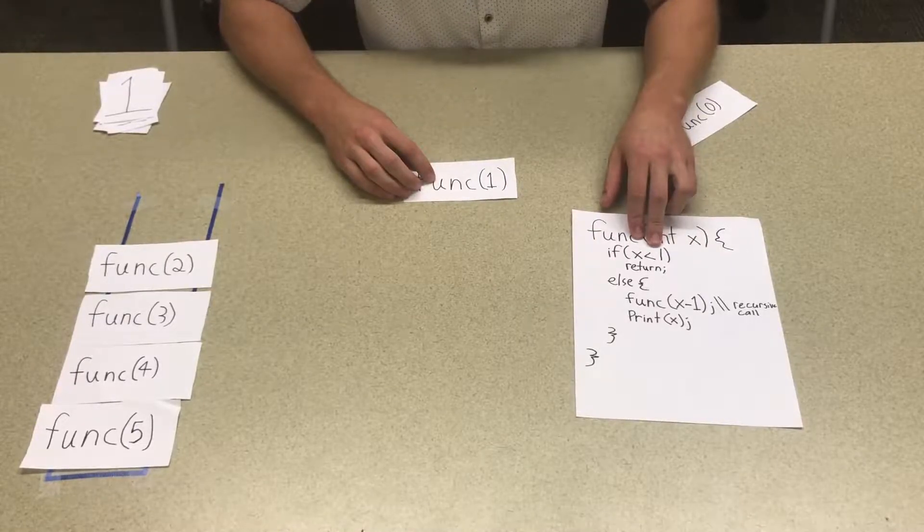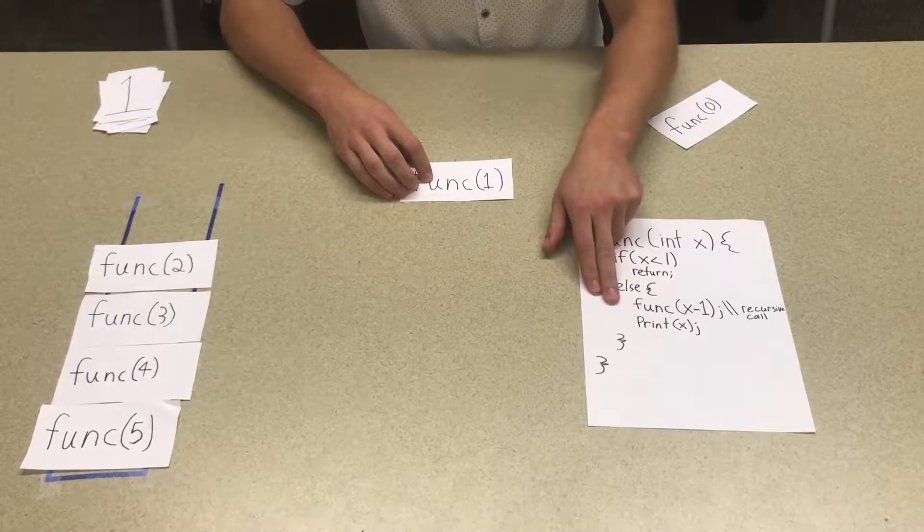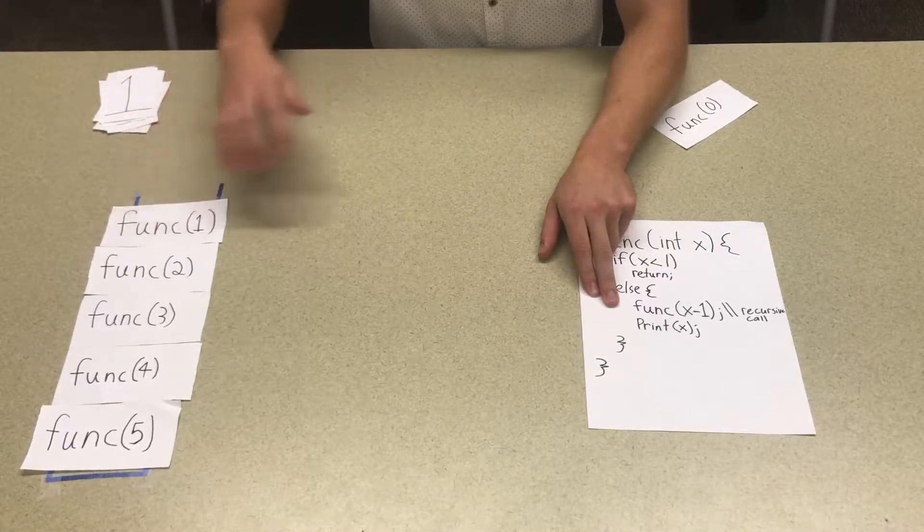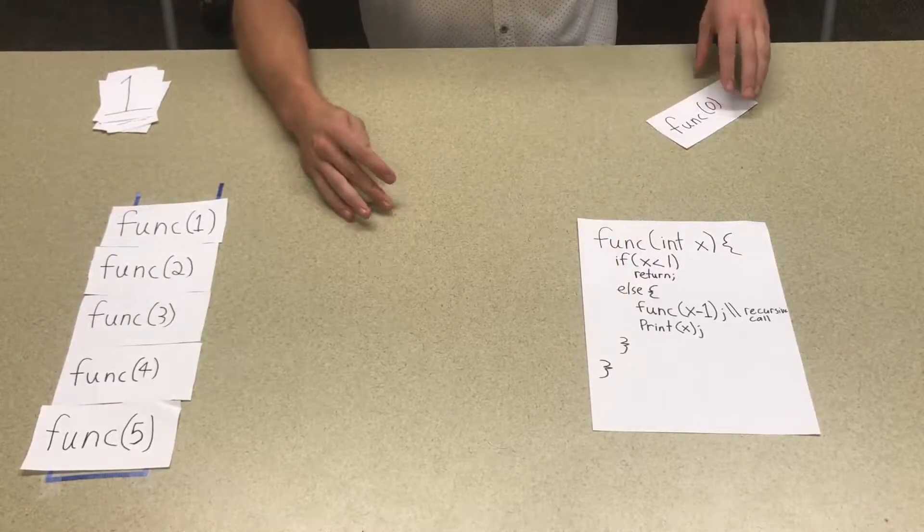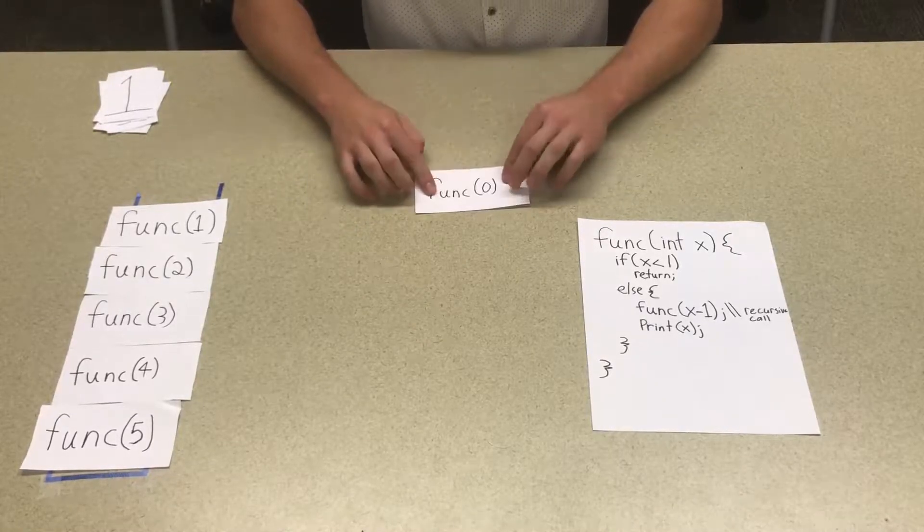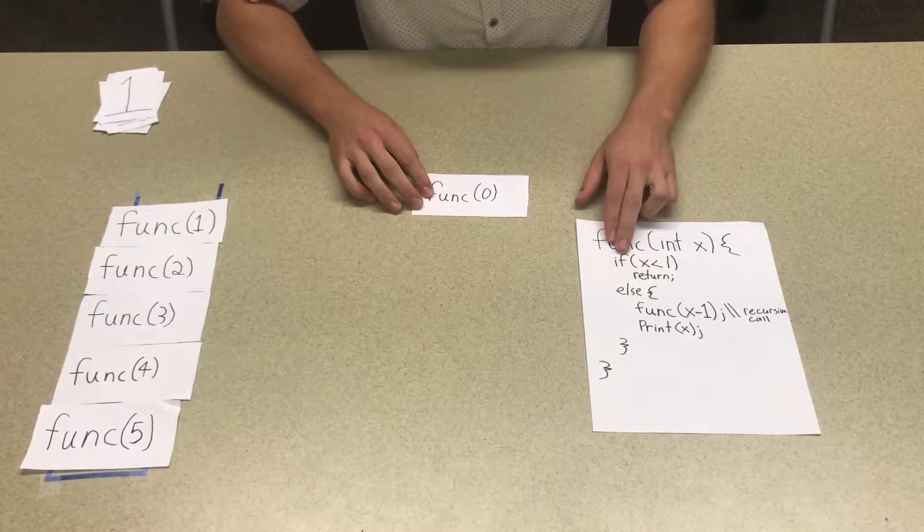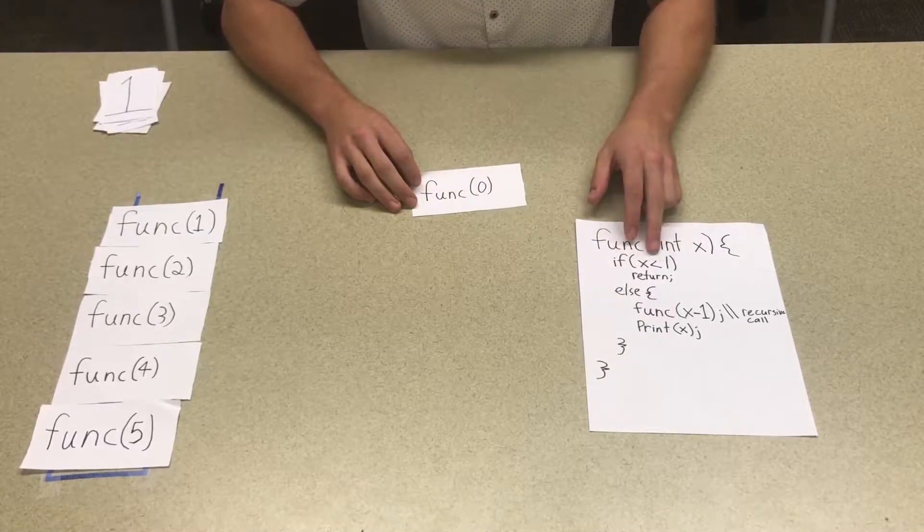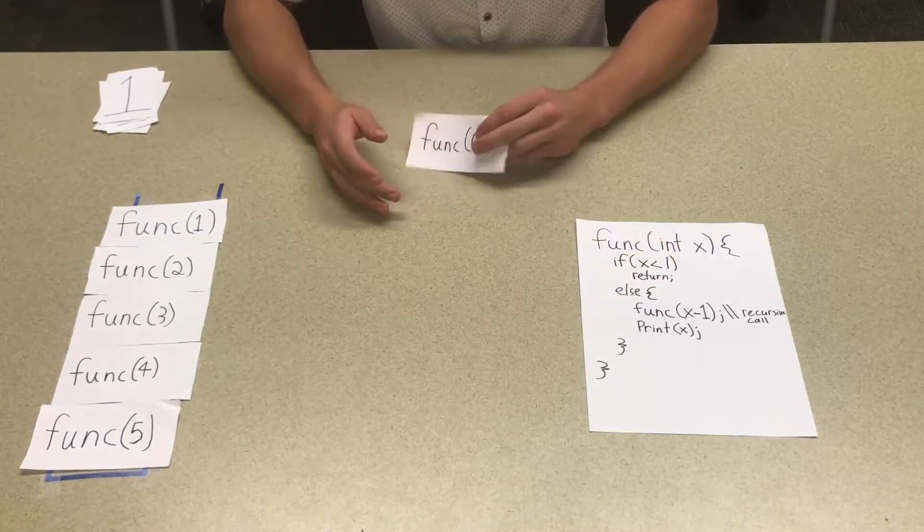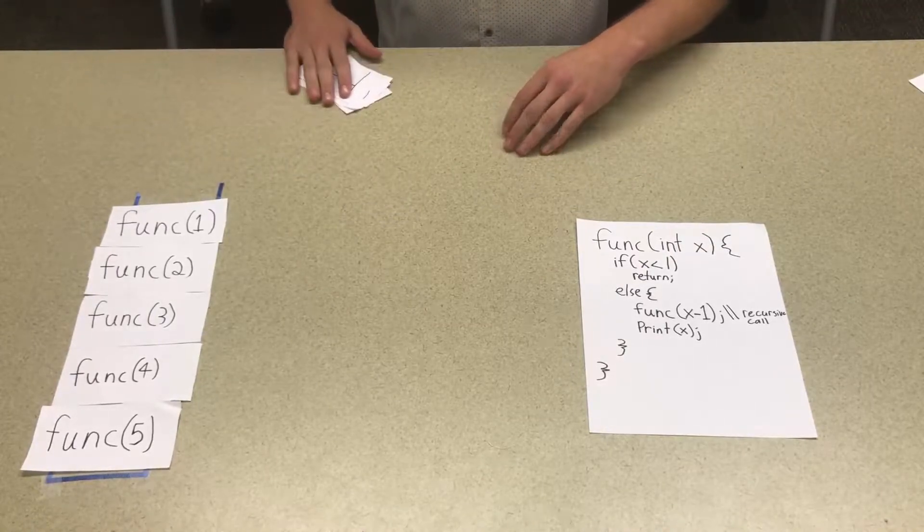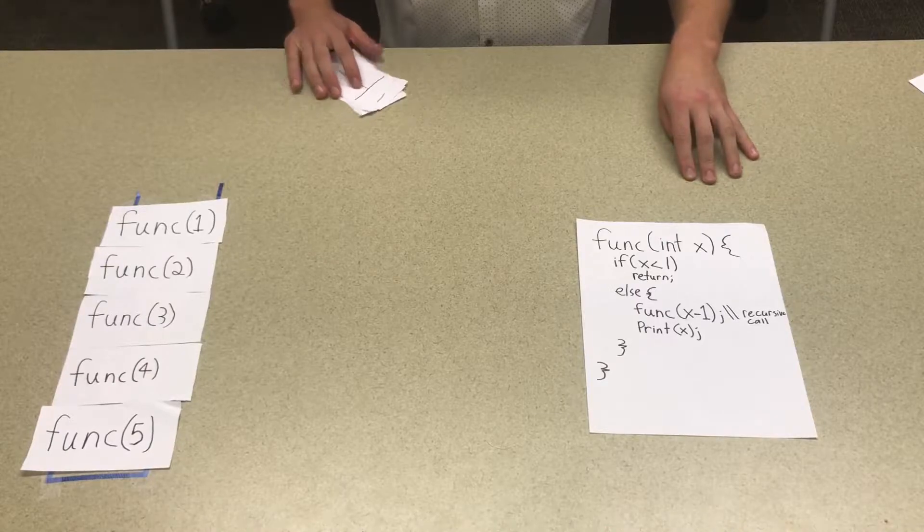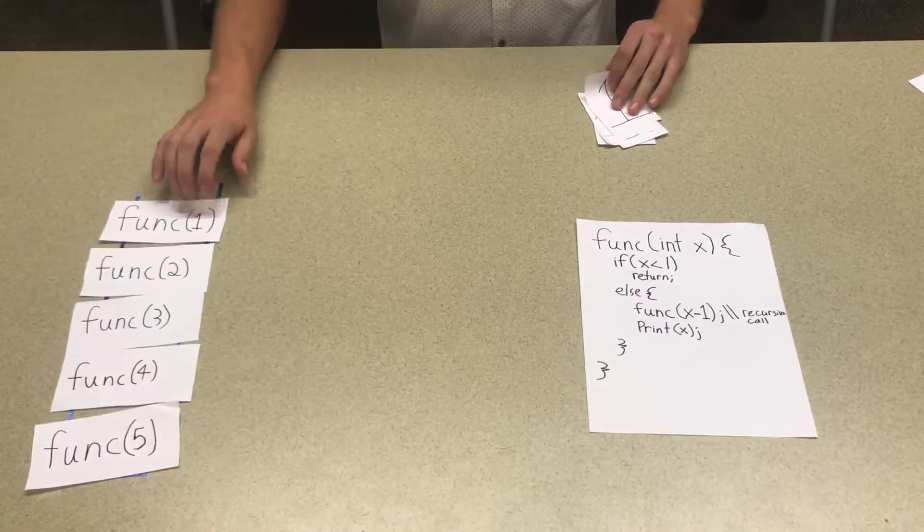We're going to push this onto the recursive call stack. Now we're on to funk of 1. 1 is still not less than 1. So now we go back into our else branch, and we see that we have to push this on top of the call stack. Of course, 1 minus 1 is 0. Now we're into funk of 0. So oh my lord, look at this. We've entered our base case. 0 is indeed less than 1. So we're going to return. Now, we are out of the function. The function has stopped. This recursive function is over. And now the stack unwinds. So we pop it off.